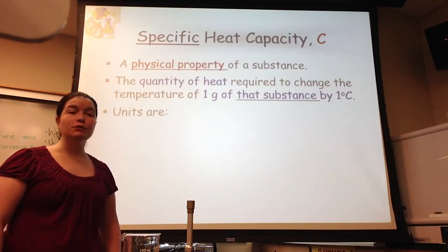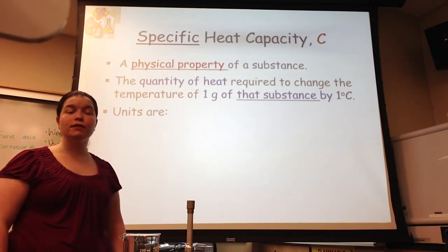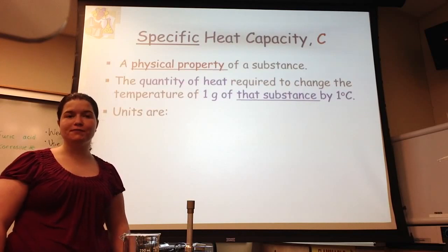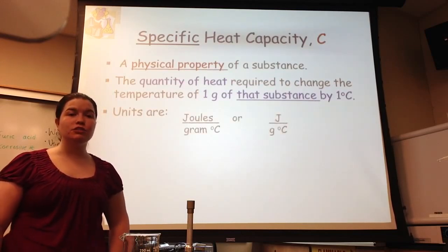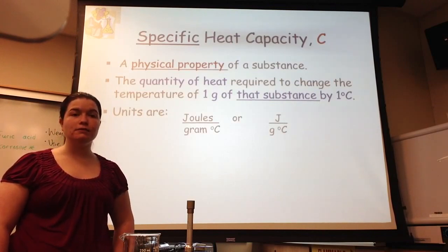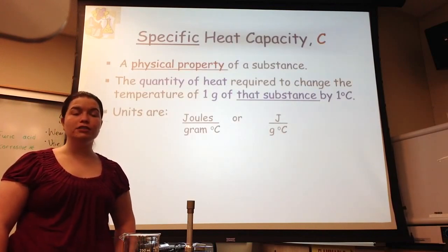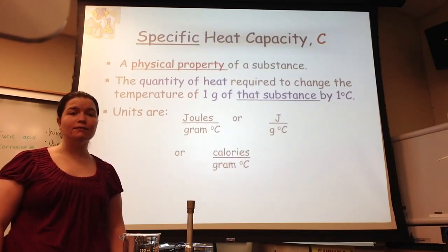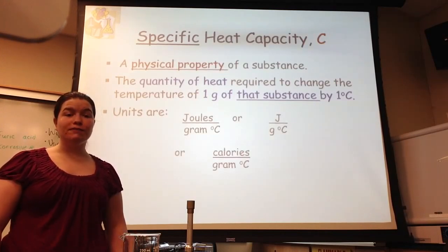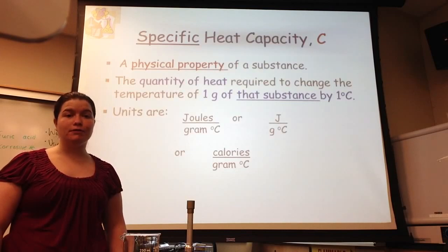It comes in two different forms of units. Since we can measure heat in joules and calories, we have two different forms of specific heat capacity. We can measure specific heat capacity in joules per gram degree Celsius, or J divided by g degrees Celsius. Since we can also measure heat in calories, we can measure specific heat in calories per gram degree Celsius, or cal per gram degree Celsius.